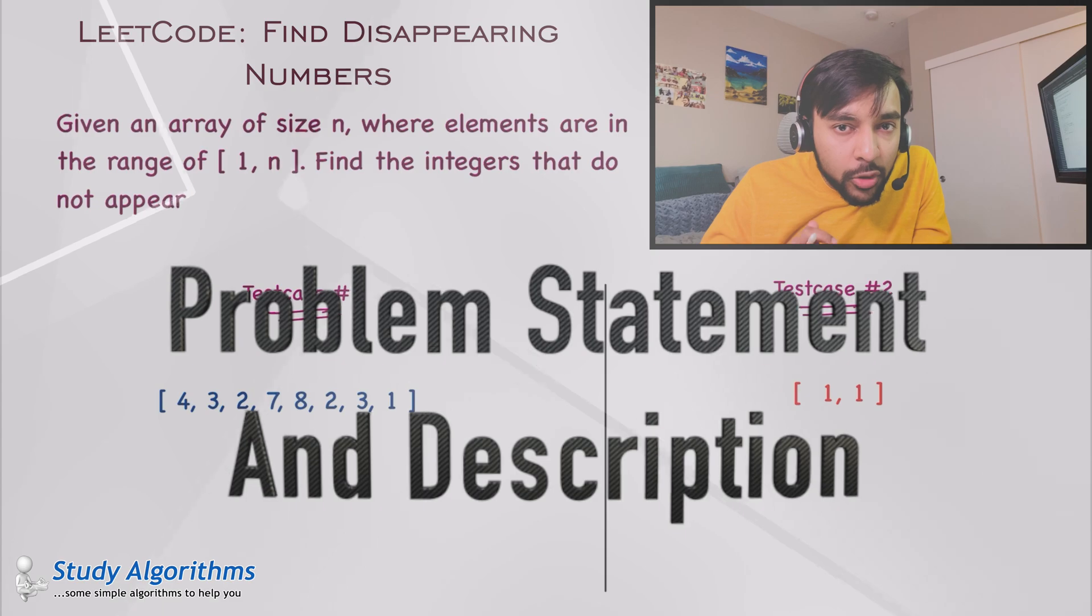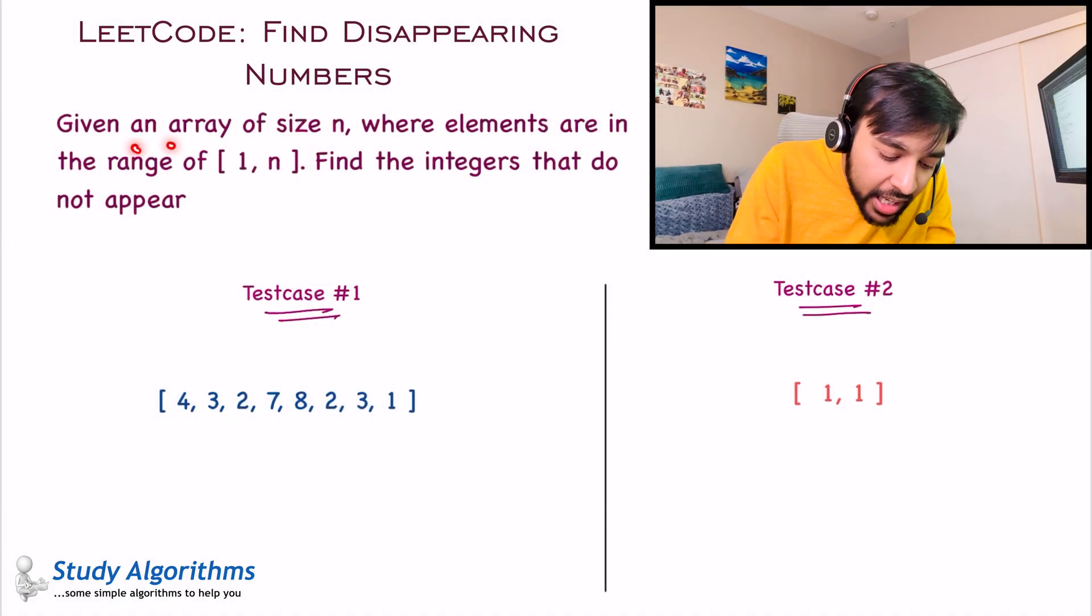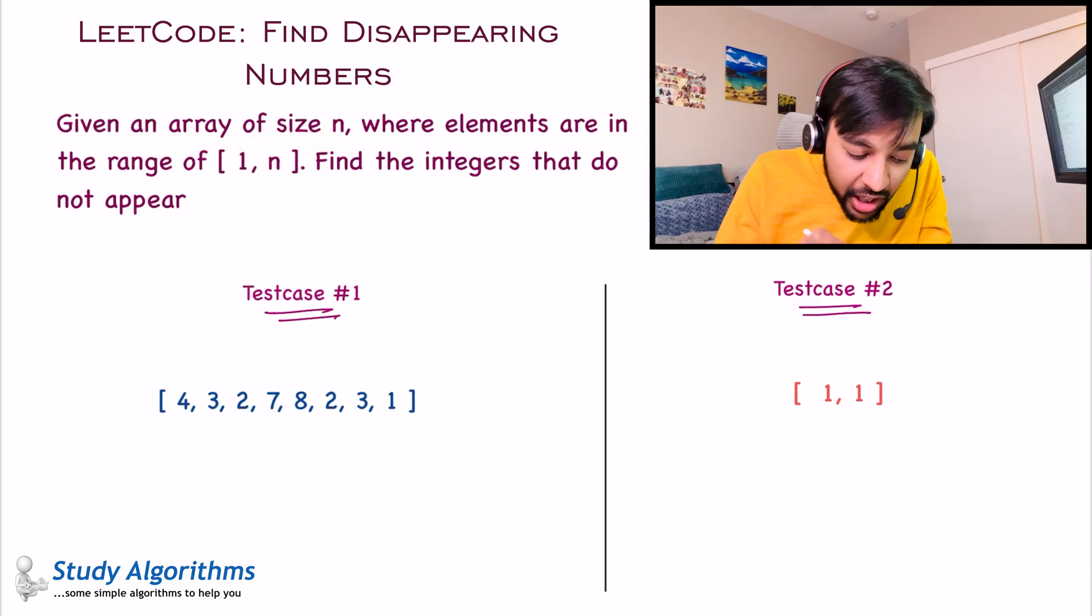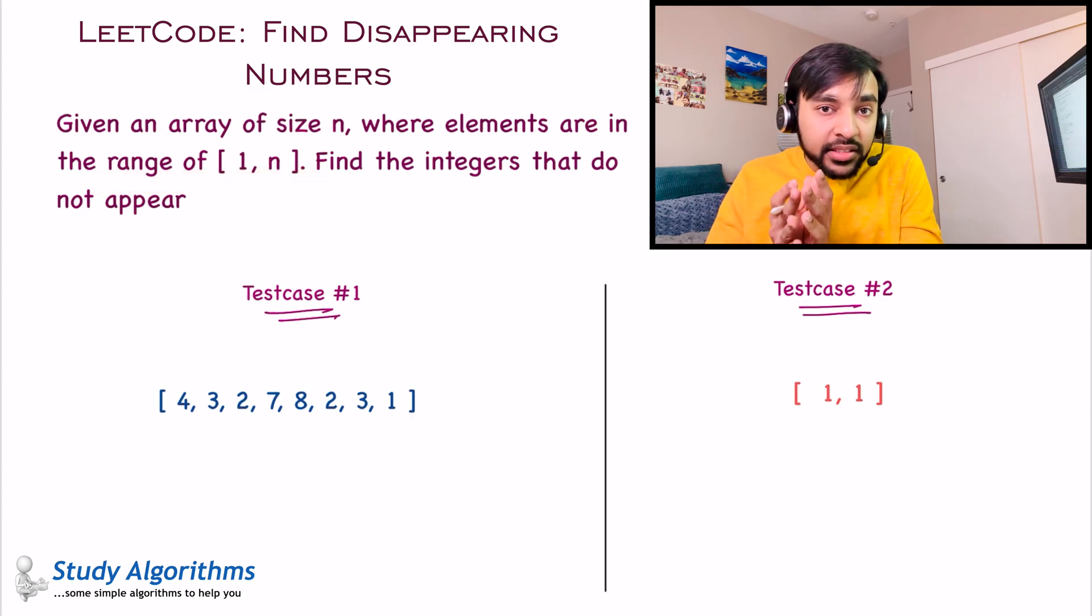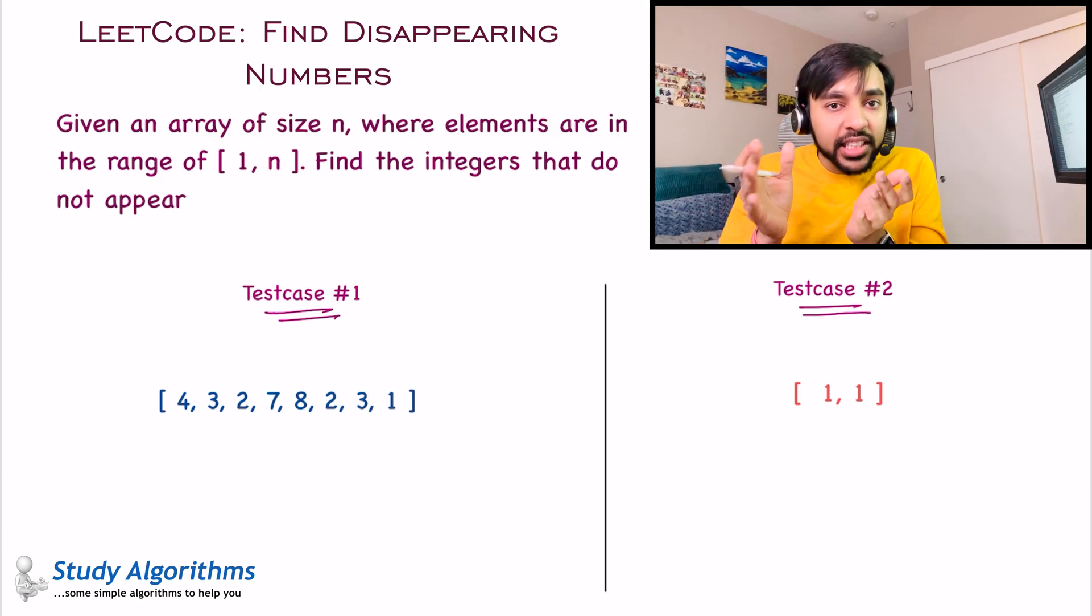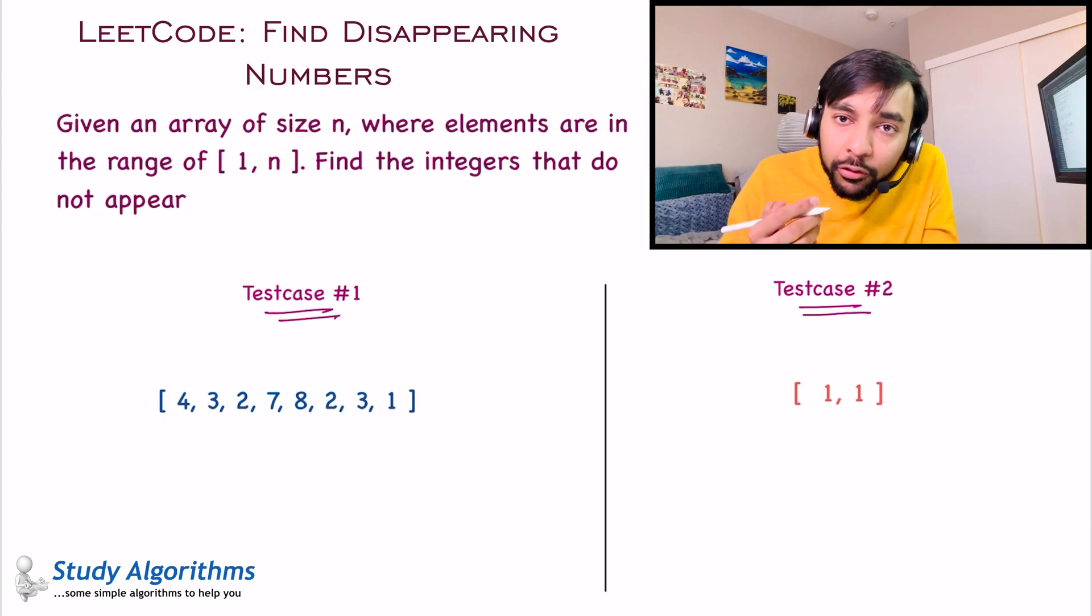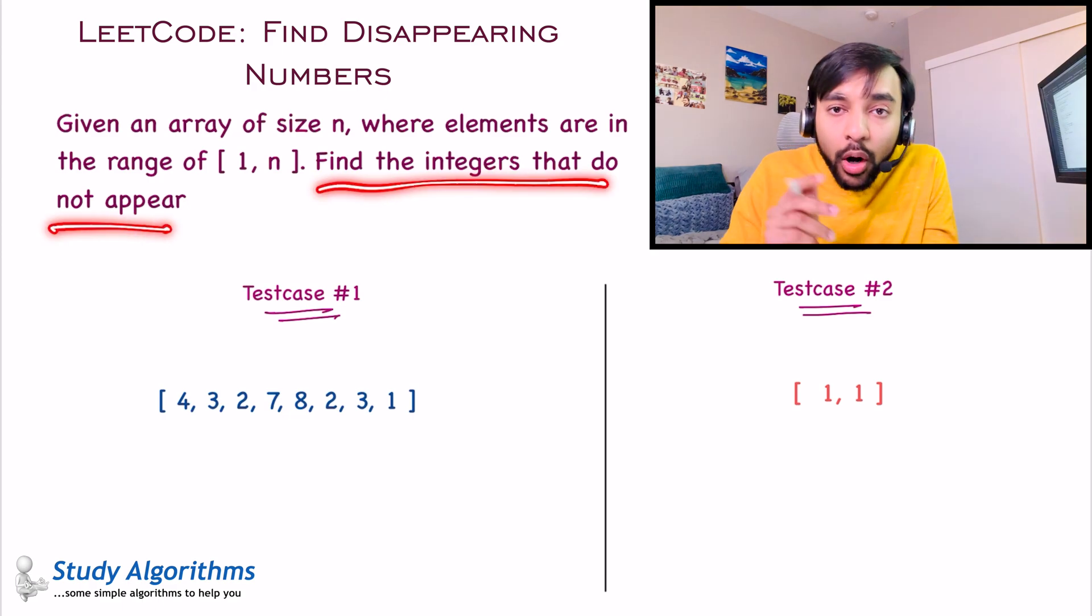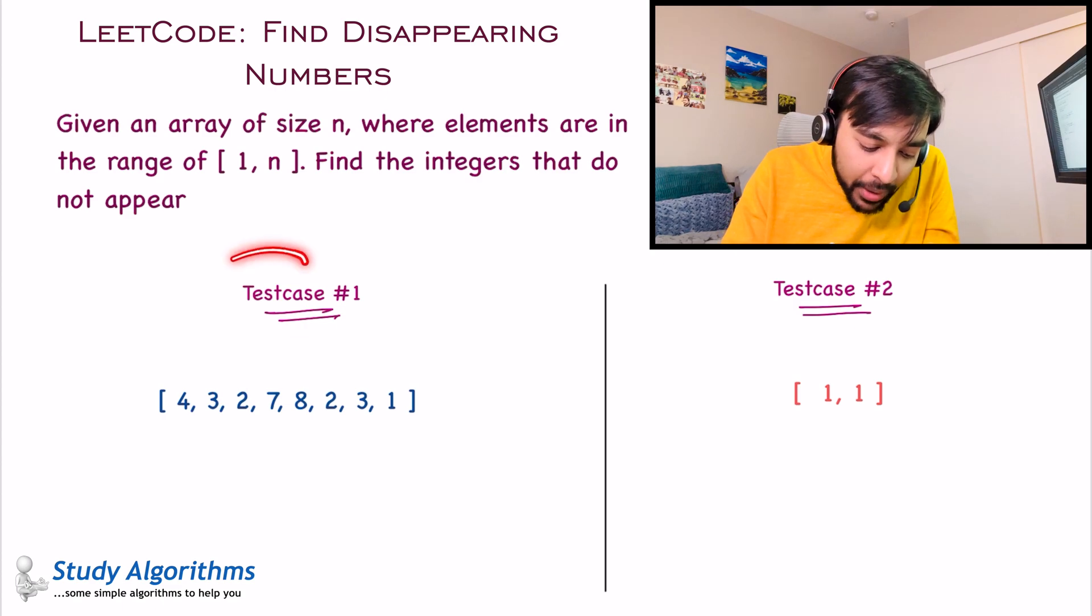First, let's make sure we're understanding the problem statement correctly. You are given an array of size n where elements are in the range of 1 to n. That means if the size of the array is 10, then that array could have elements from 1 to 10. If your array size is 20, then the elements could be in the range of 1 to 20. And what do you have to do? You have to find the integers that do not appear. Let us understand this with a sample test case.